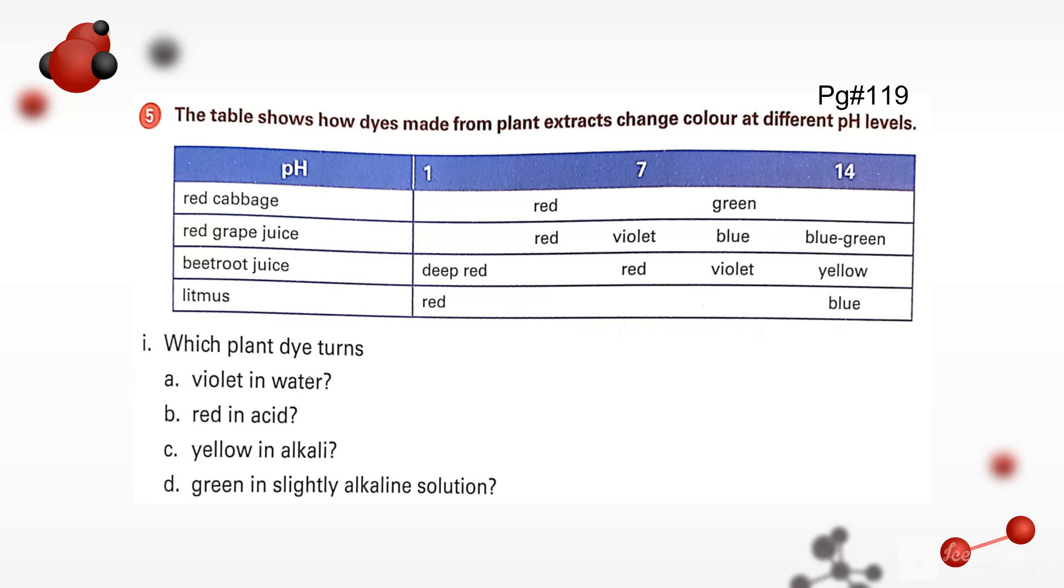Come towards the fifth question. The table shows how dyes made from plant extracts change colors at different pH levels. These are the different dyes: red cabbages, red grape juices, beetroot juices and litmus. These are the different solutions we will find and the color will appear over there. Which plant dye turns violet in water? We can clearly see here that water 7 is the neutral number of water and it is violet there.